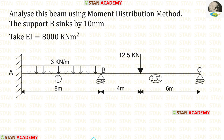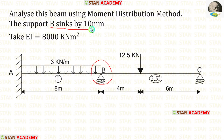Hello everyone. Today we are going to analyze this beam using the moment distribution method. In this beam, the support B sinks by 10 mm. The flexural rigidity EI is given as 8000 kNm².